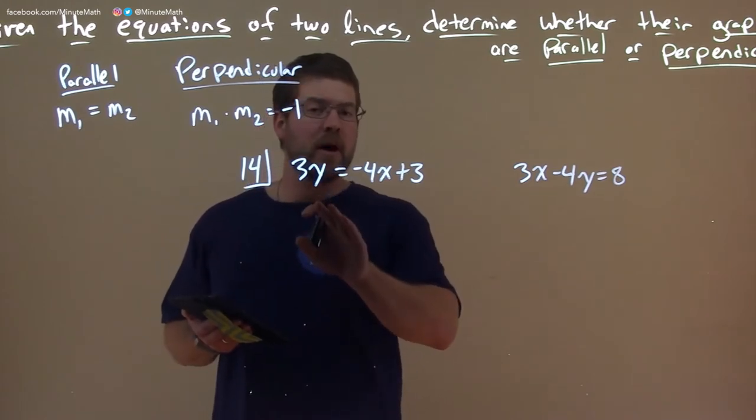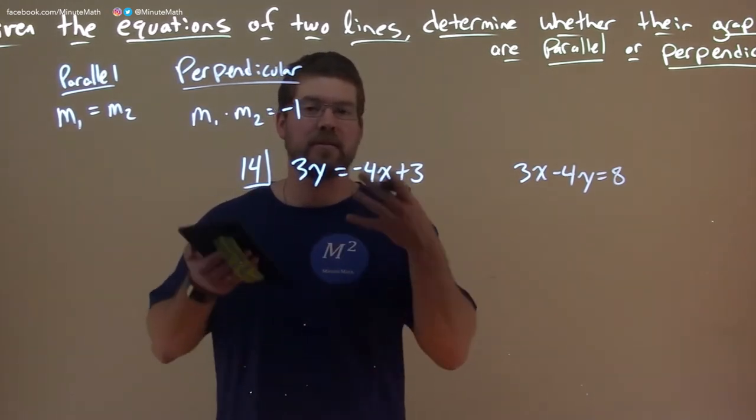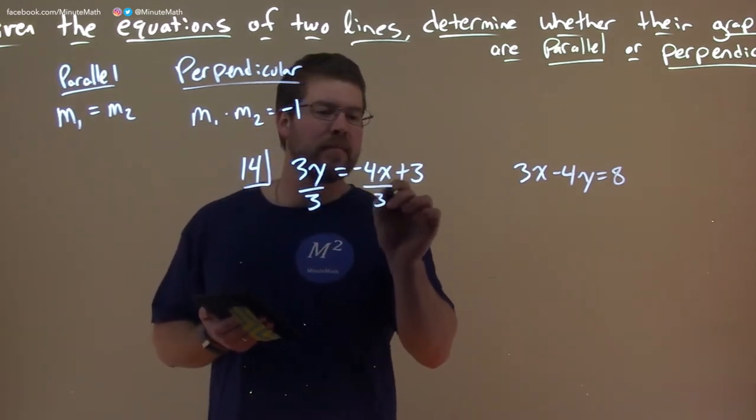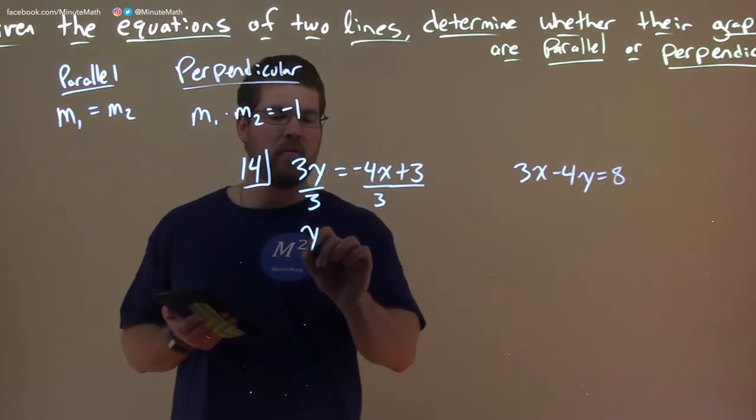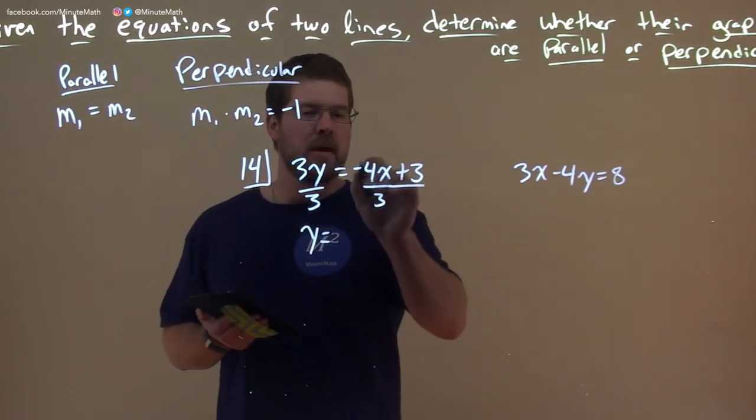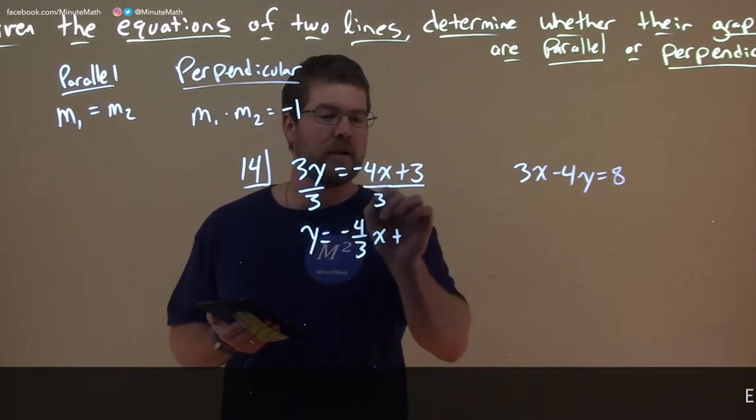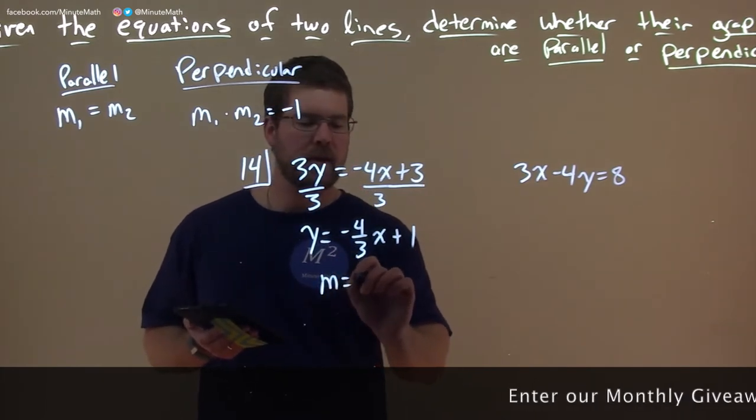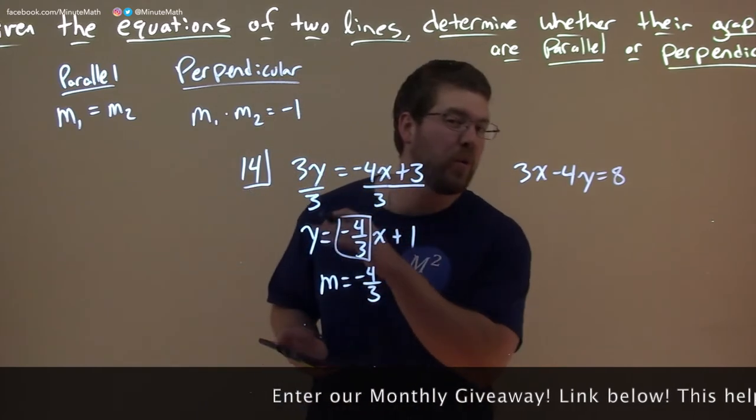So what I like to do is get y by itself. Let's get it in slope intercept form and we can easily find the slope. So I'm going to divide both sides by 3 here to all parts. Make sure it goes to both parts. We have y by itself here. Negative 4 divided by 3 is negative 4 thirds x plus 3 divided by 3 is 1. So this tells us our slope here is negative 4 thirds. That is our slope and that's really all we care about.